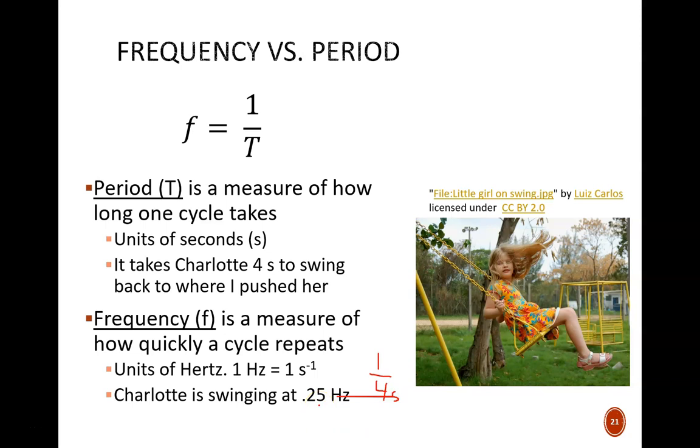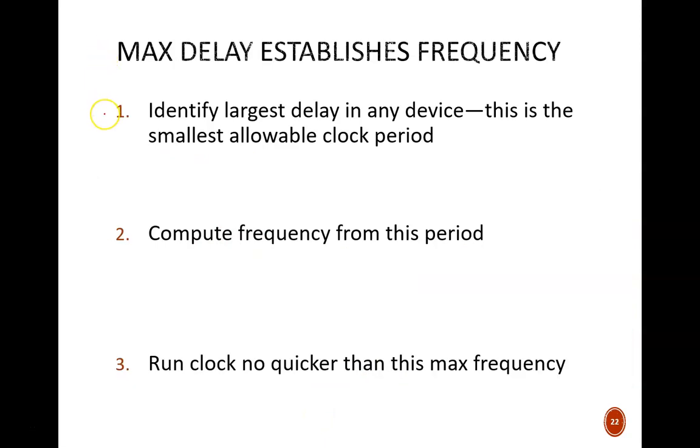Since we know the period, we can compute the frequency by simply computing 1 over the period. Let's assume that the 4-bit adder is the slowest device my computer's processor is connected to. What is the maximum allowable frequency? The first step in answering this is to identify the largest propagation delay. We found that to be 120 nanoseconds.